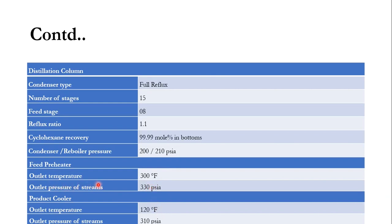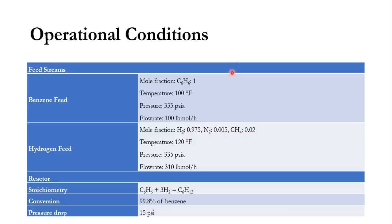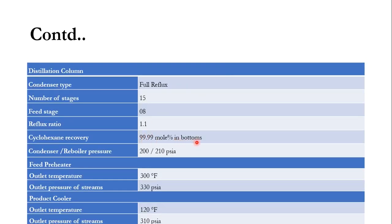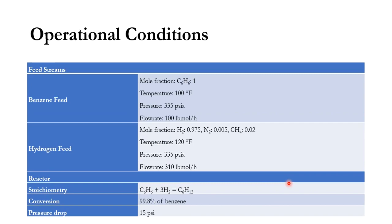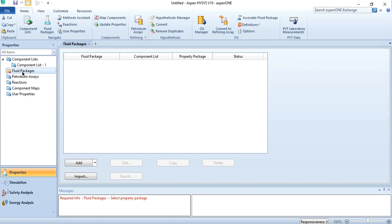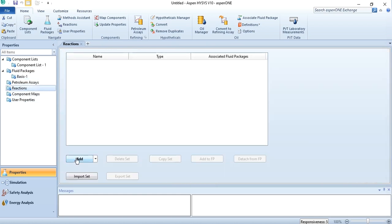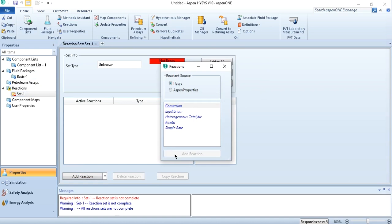Let's go to Aspen HYSYS and solve this flow sheet to obtain the required specification of 99.99 mol% cyclohexane recovery in the bottom. Since the system is majorly hydrocarbon and contains nitrogen and hydrogen, the Peng-Robinson property package will be used. The components added are hydrogen, nitrogen, methane, cyclohexane, benzene, and water. After clicking Add, the Peng-Robinson property package is selected. Then go to Reactions, click Add, and since it is a conversion reactor, a conversion reaction is added.